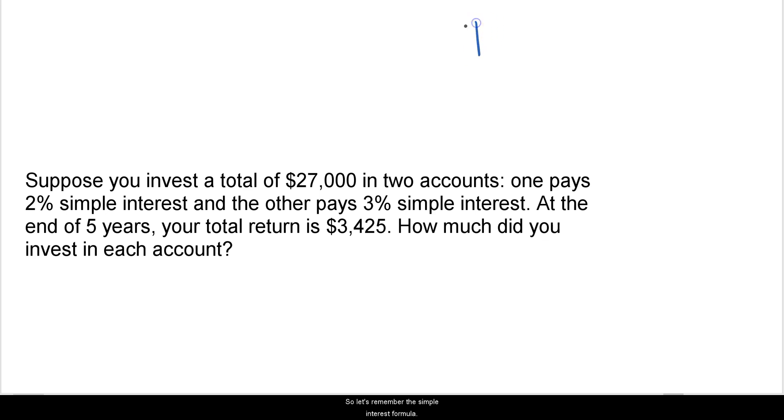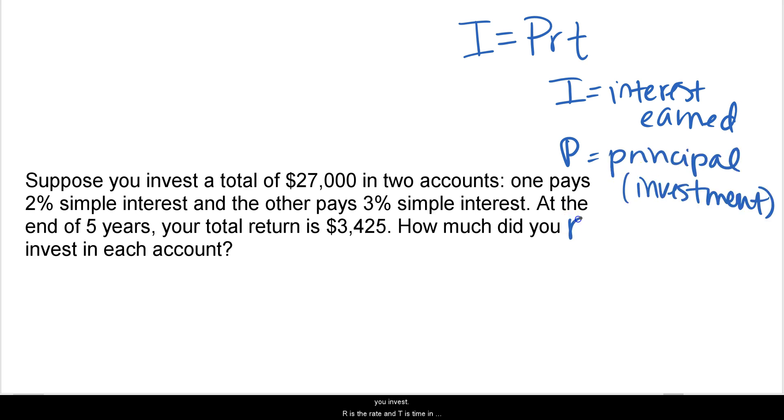So let's remember the simple interest formula: I equals P, R, T. I equals the interest earned. P equals the principal, or you can think of it as what you invest. R is the rate, and T is time in years.